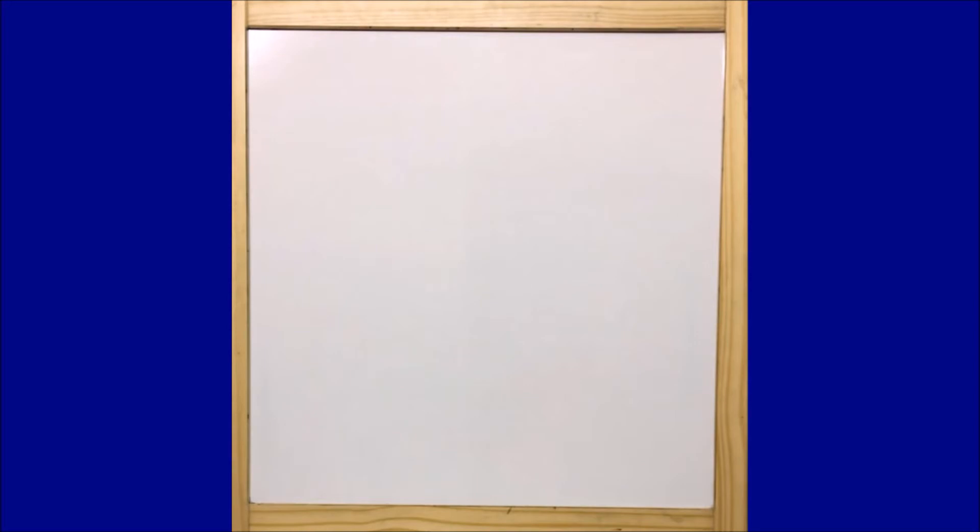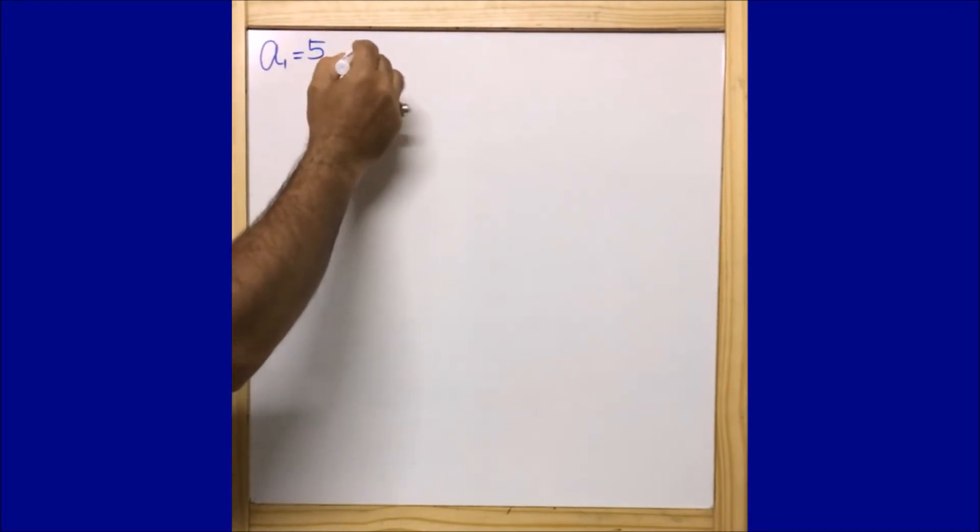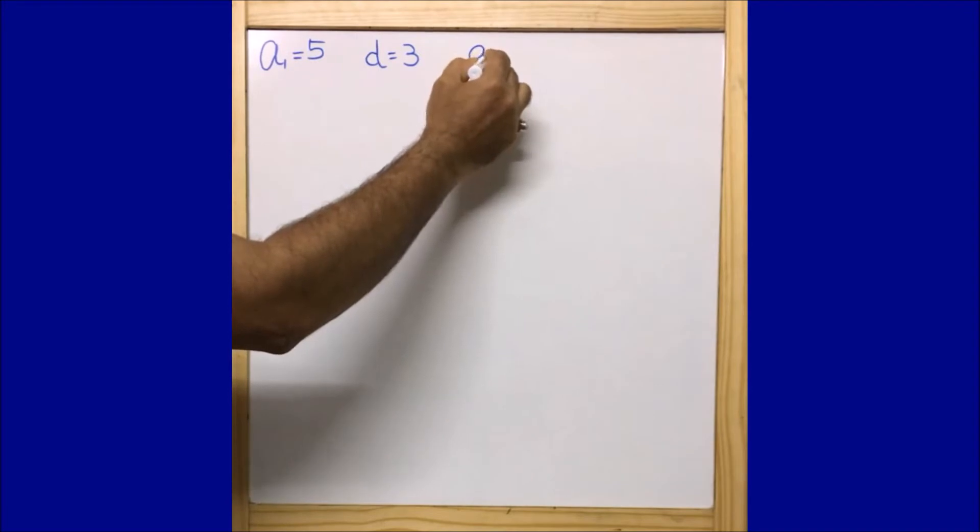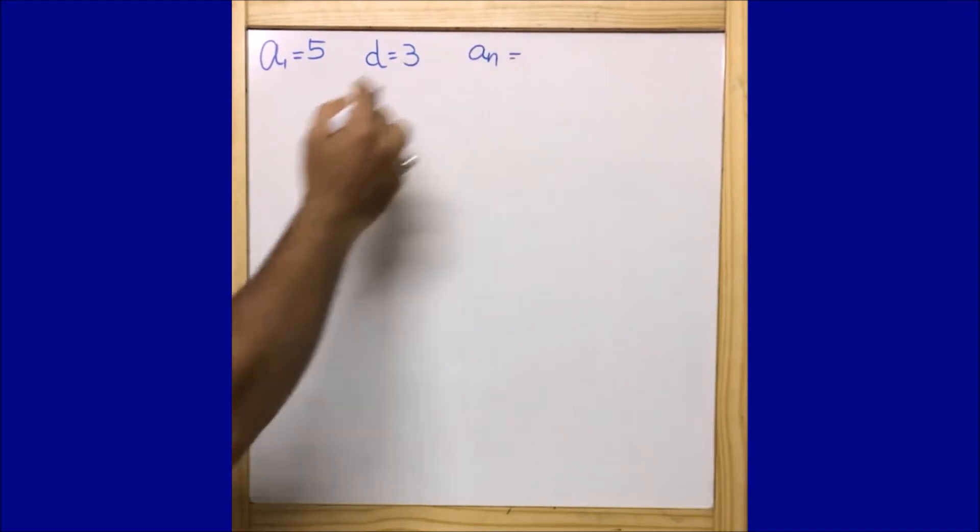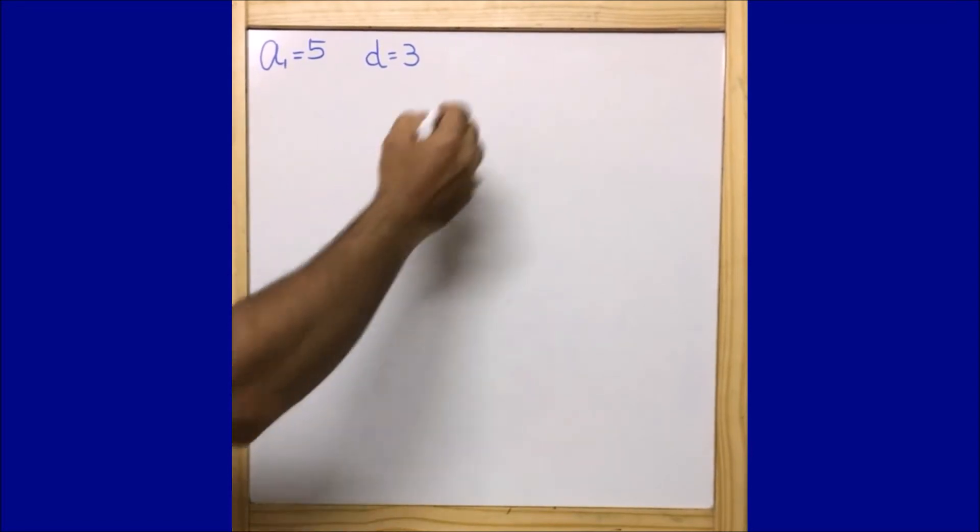First of all, let us write down the things that are being given. So I can say a₁ equals 5, d equals 3, and aₙ equals 50.